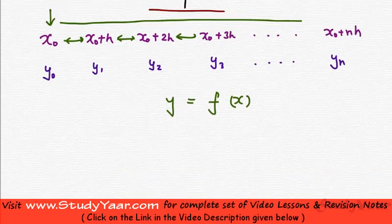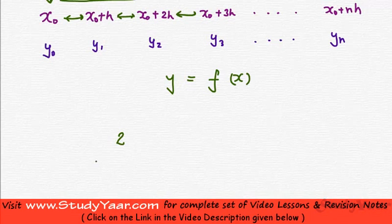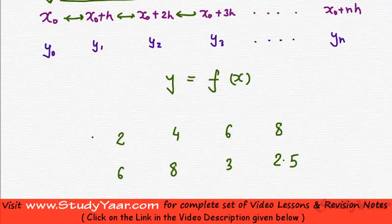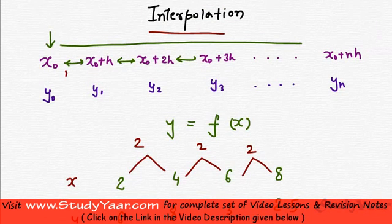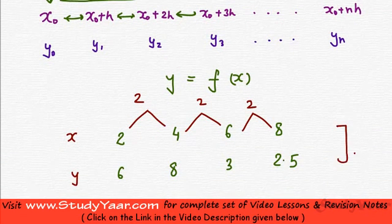Let's say that you know the value that at x equal to 2, y is equal to 6. At x equal to 4, y is equal to 8. At x equal to 6, y is equal to 3. At x equal to 8, y is equal to 2.5. So what you have is a finite set of values for x and y taken at equal sub-intervals for x. The difference is 2 everywhere, so you have a difference of h everywhere.